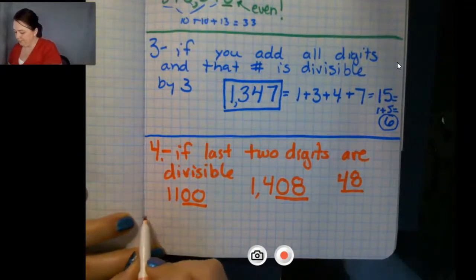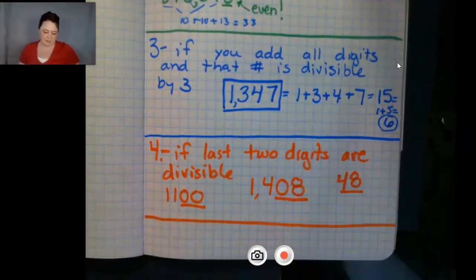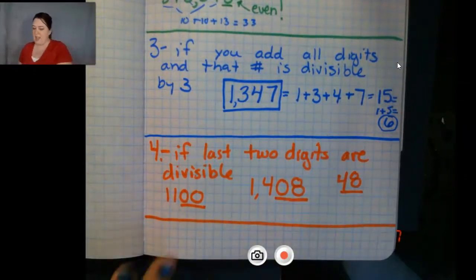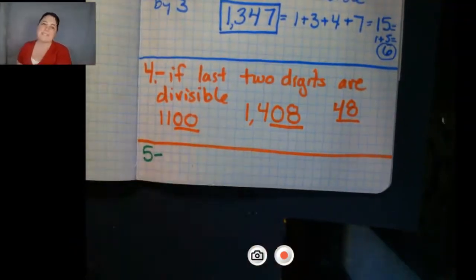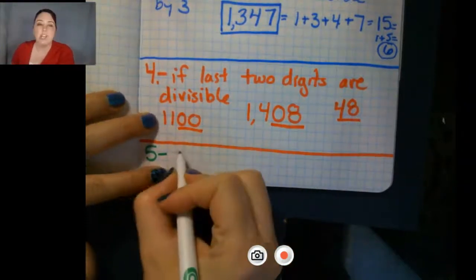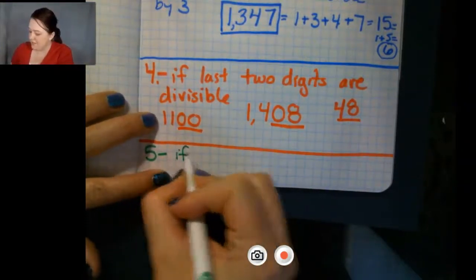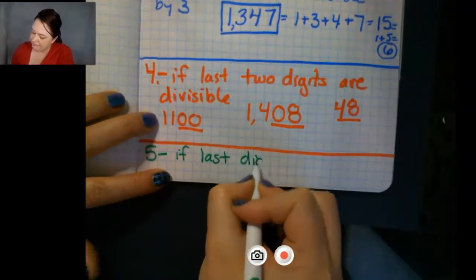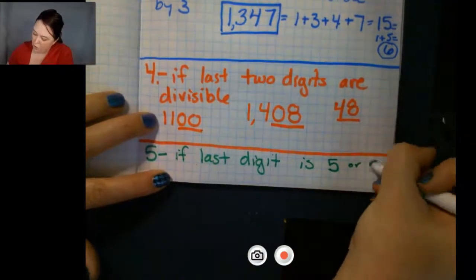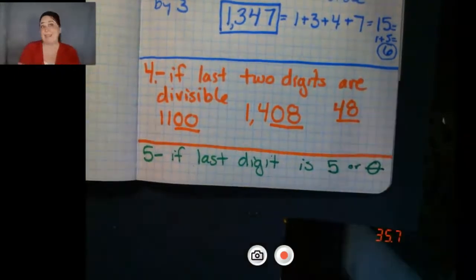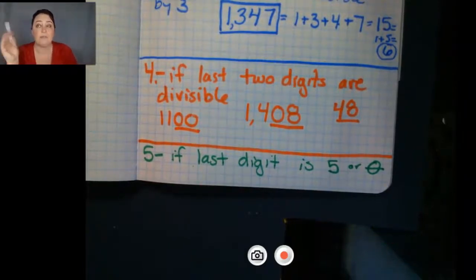Now, I always run out of room, you guys. I'm going to have to go to the next page, but I think I can do fives in this tiny little space. Fives. I like fives too. I like the ones where I can just look at the number and be like, you're divisible. It makes it a lot easier. So five is the last digit is five or zero.